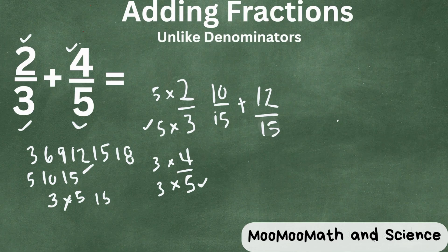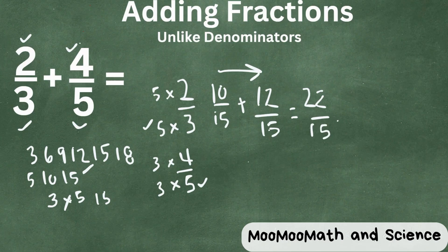So now we have a common denominator, and we have the fractions renamed. So now let's just add straight across. Ten plus twelve is twenty-two, and you keep the denominator the same.